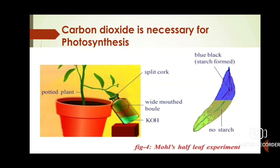This is the whole experiment. You must study the requirements: the aim is 'Does carbon dioxide is necessary for photosynthesis?' Materials required are potted plant, split cork, wide-mouthed bottle, KOH, iodine solution, beaker, spirit lamp, and test tube. Write the procedure step by step, draw the diagram, note your observations, and write the result: carbon dioxide is necessary for photosynthesis.